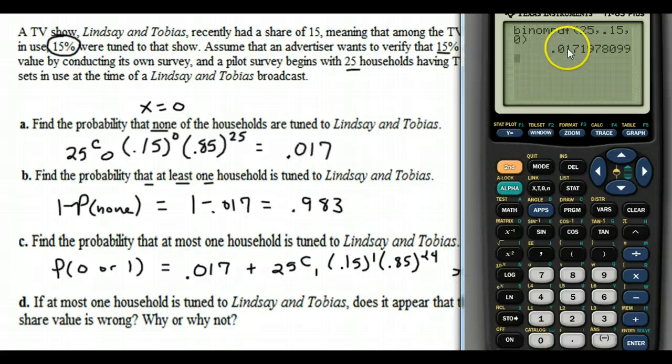And we get 0.0171, so it rounded to three places. That does all of this for you just by giving it N, P, and X.